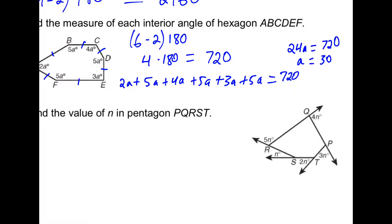They want to find the measure of each interior angle. So if we plug 30 in, 2a becomes 60, 5a becomes 150, 4a becomes 120, 150 again, 90, and 150.